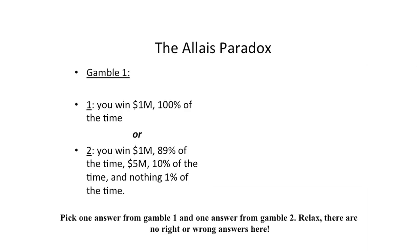Here's what I'm asking you to do in your notes. Consider Gamble 1 — there are two options. Option one: you get the guaranteed million dollars, you win it 100% of the time, so it's yours. Or option two: you win a million dollars 89% of the time, five million dollars 10% of the time, and there's a one-in-a-hundred chance you get nothing. There's no right or wrong answer. Just jot down which of these most appeals to you — put a one or a two in your notes.